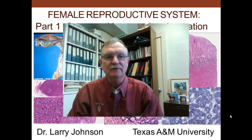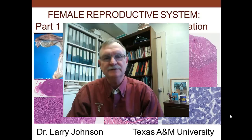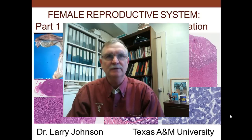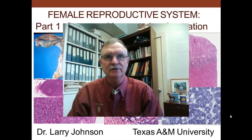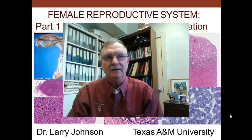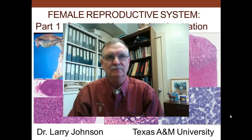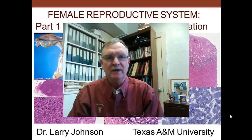Today we're going to talk about the female reproductive system. It will be composed of three parts. The first part has to do with the ovary and the hormonal orchestration of the reproductive process. Part two has to do with the uterine tube and how things are different during the menstrual cycle and pregnancy. Part three will continue with the cervix and vagina, then the placenta, ending with the mammary glands.